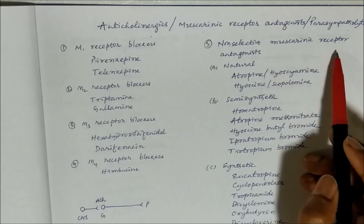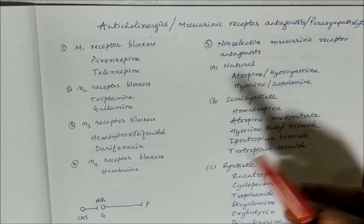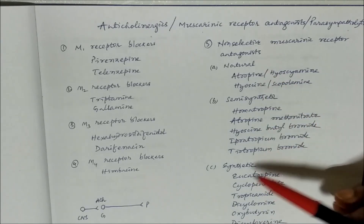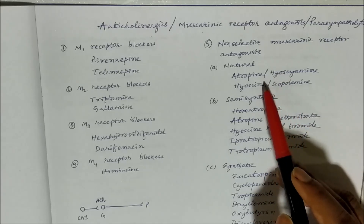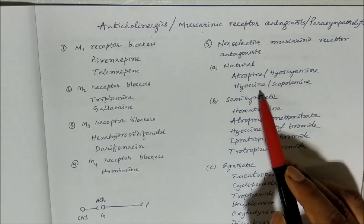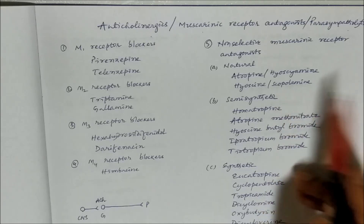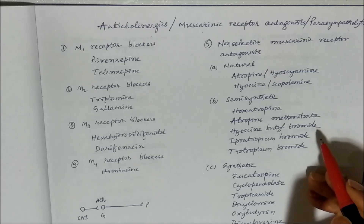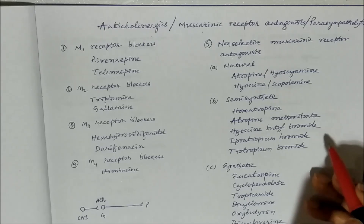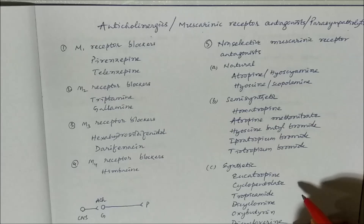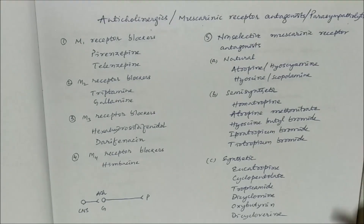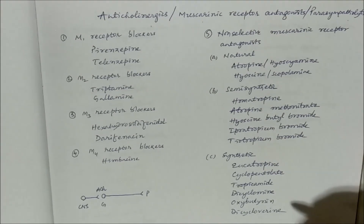Then, non-selective muscarinic receptor antagonists, which will block all the muscarinic receptors, and we can classify them as natural, semi-synthetic, and synthetic. Natural: atropine or hyoscyamine, and hyoscine or scopolamine. Semi-synthetic: homatropine, atropine methonitrate, hyoscine butylbromide, ipratropium bromide, tiotropium bromide. Then synthetic: eucatropine, cyclopentolate, tropicamide, dicyclomine, oxybutynin, and dicycloverine.